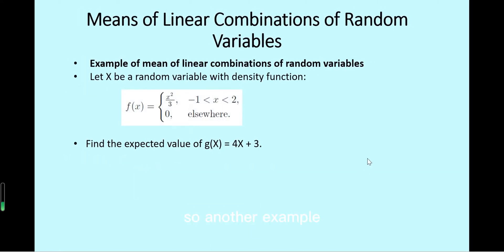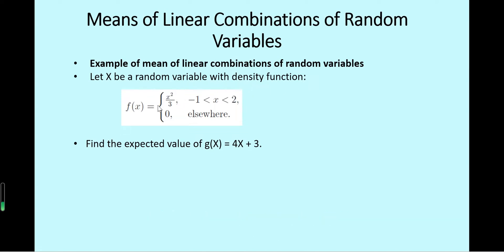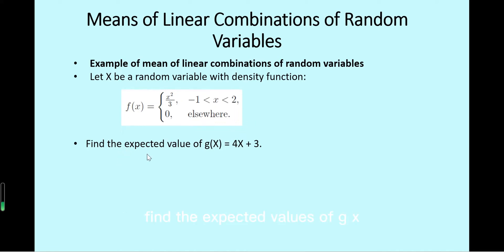Another example for linear combinations involves a continuous random variable. Let x be a random variable with density function f(x) equals x squared divided by 3, for x between minus 1 and 2, and 0 otherwise. The question is: find the expected value of g(x) equals 4x plus 3.